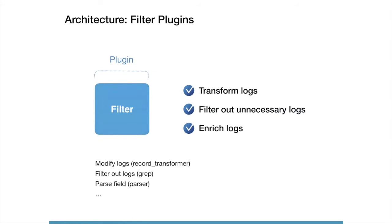The filter plugin is simple — it filters or mutates events. For example, adding a hostname to the event record, or checking a condition to ignore unnecessary logs. Filter plugins can be chained, so you can apply multiple filters to the data stream.